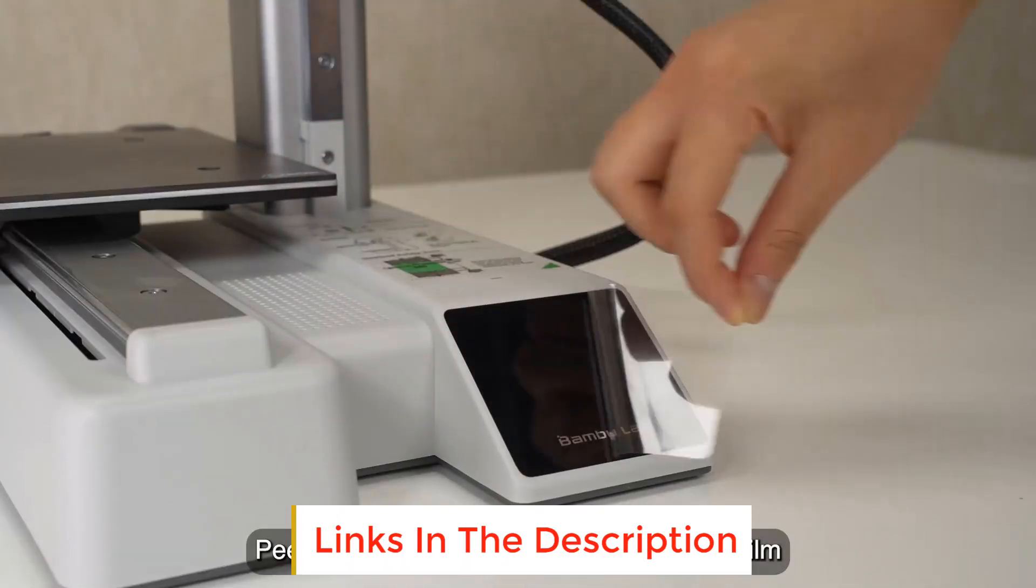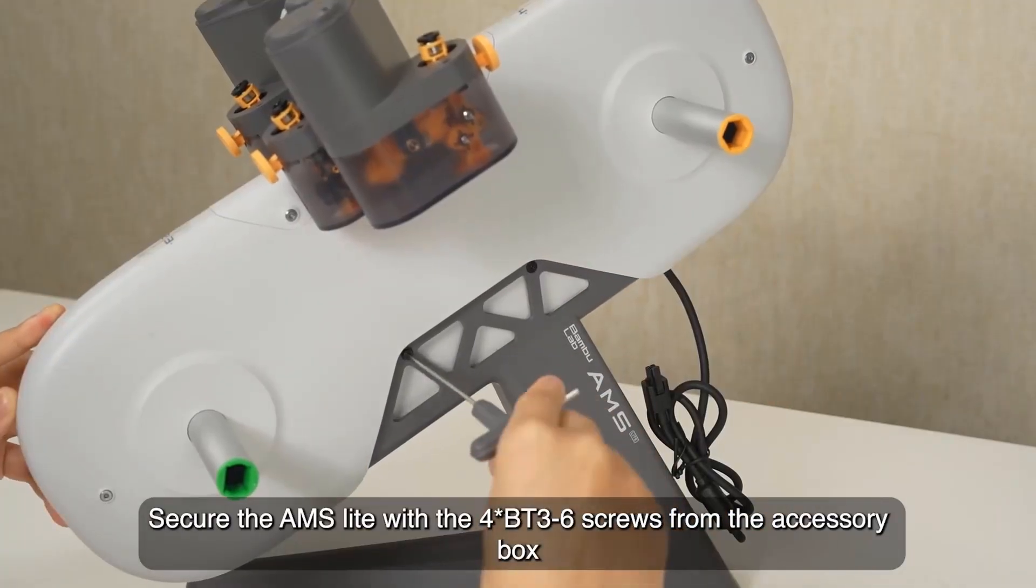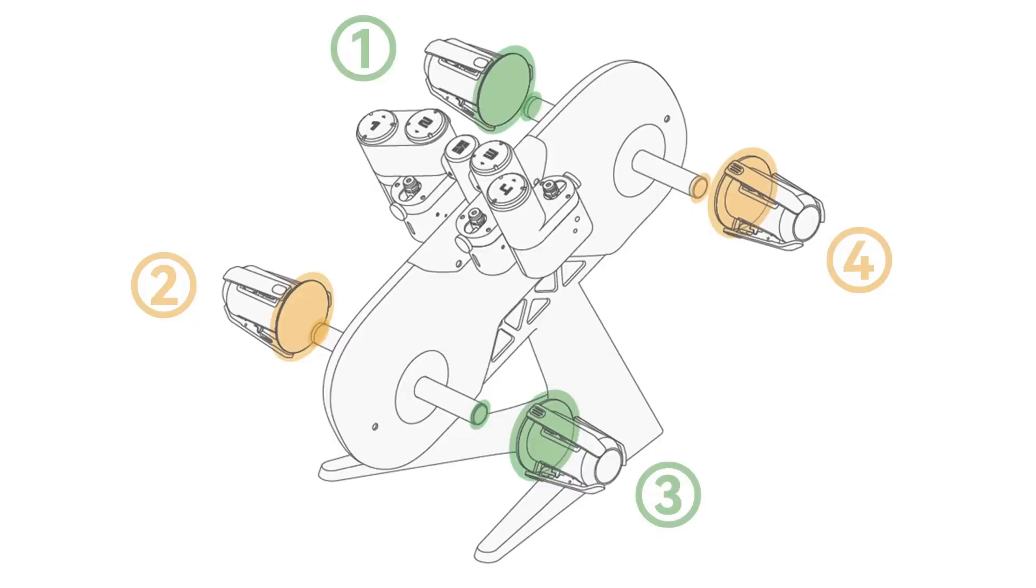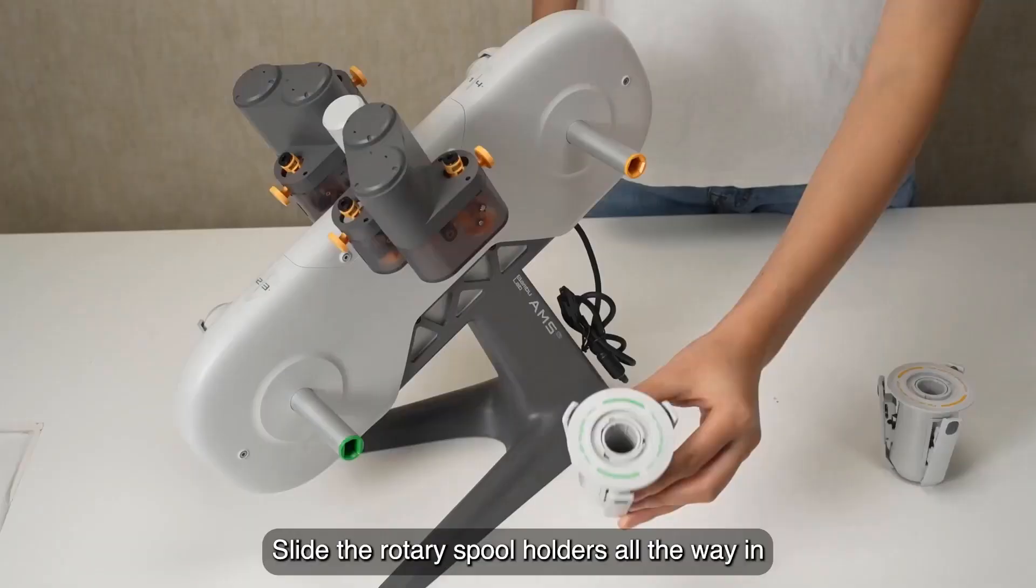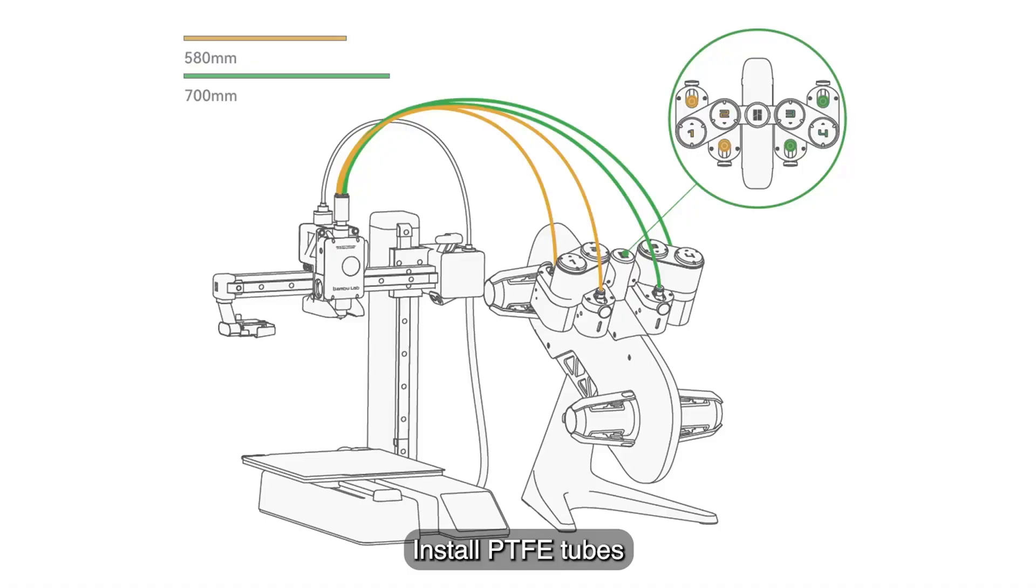The print bed can reach a temperature of 176 degrees Fahrenheit, which is a little lower than the 212 degrees supported by some other FDM printers. In my tests, the bed temperature defaulted to 140 degrees, and I had no problems with adhesion or object removal.